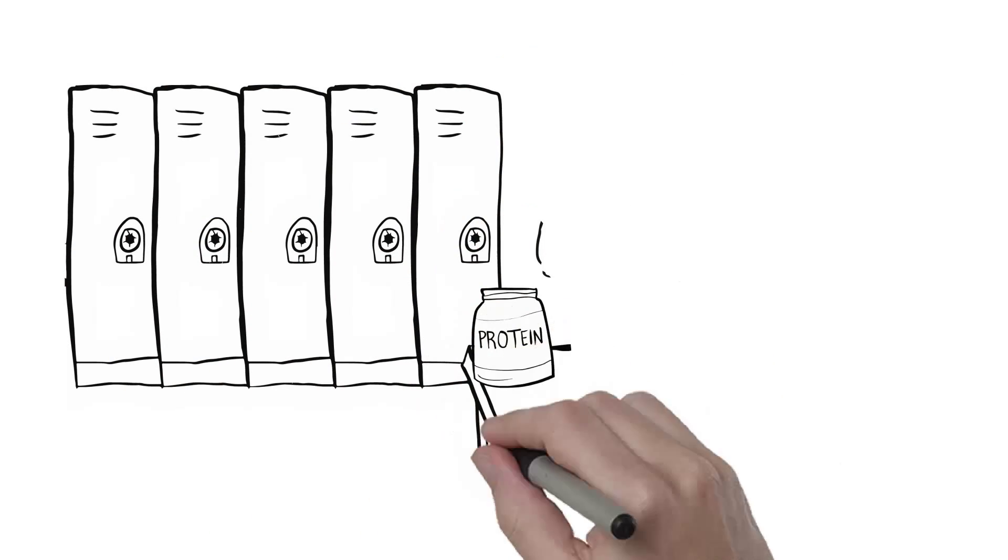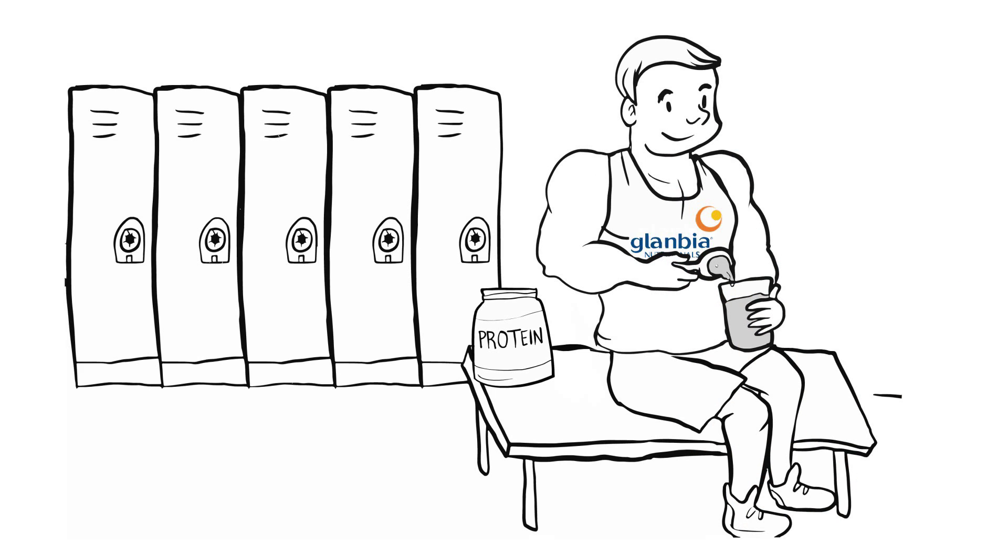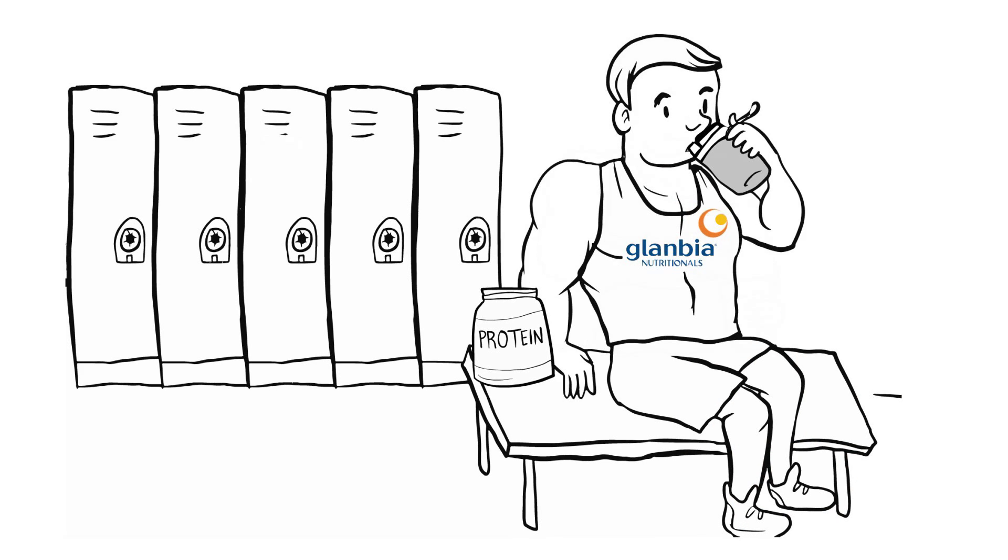Glambia's patent-pending embedded enzyme technology uses a never-before-seen two-phase release mechanism that allows for maximum amino acid and leucine delivery to muscles.